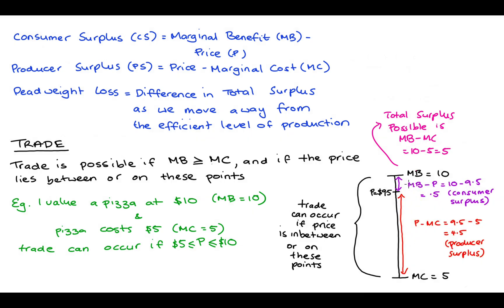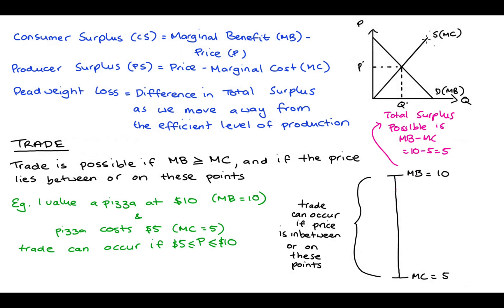It's quite straightforward to extend this understanding of producer and consumer surplus to our market diagrams. All we need to do is find our marginal cost curve, our marginal benefit curve, and the price. We take the difference between the marginal benefit curve and the price for all units consumed — that's our consumer surplus. We take the difference between the price and the marginal cost curve for all units produced — that's our producer surplus. So as an example, let's say we're talking about perfect competition and we have this diagram here.